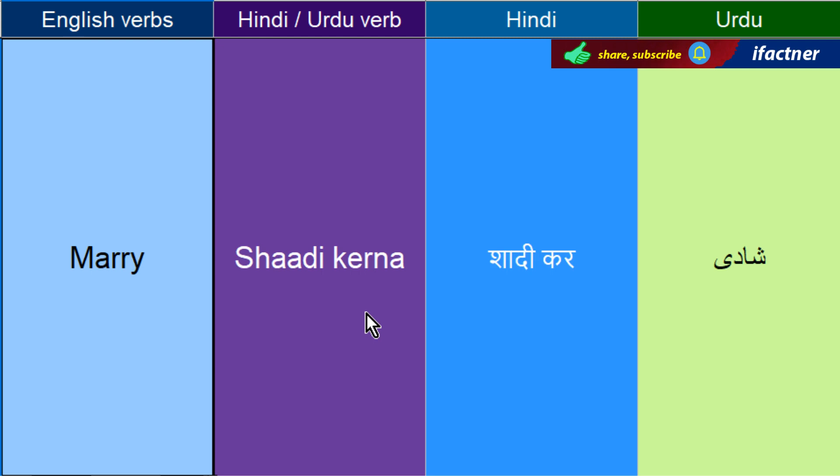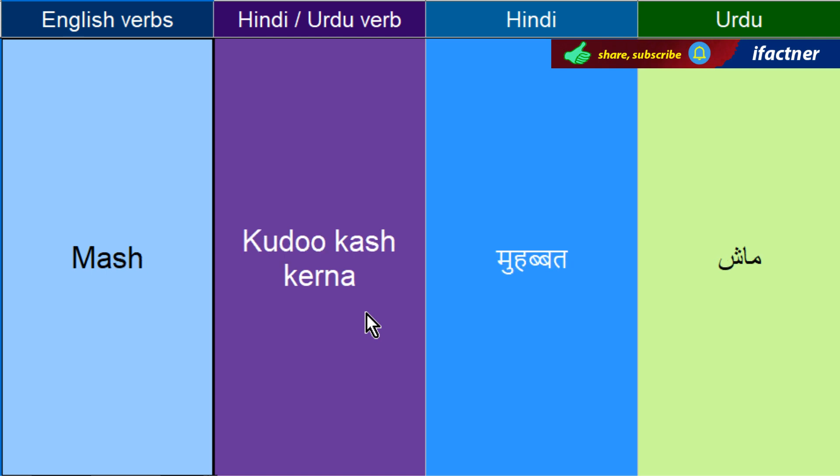Will you marry me? Kadukash kerne ko keheta hai — Mash. Mash the potatoes — yaani ka aaloo ko achi tarah se kadukash kerde hai, un ko chota chota aur ob kerde hai. Milana — Match. Aehm hoonay ko keheta hai — Matter. You matter. Why does it matter? — yeh matter keun kerta hai?